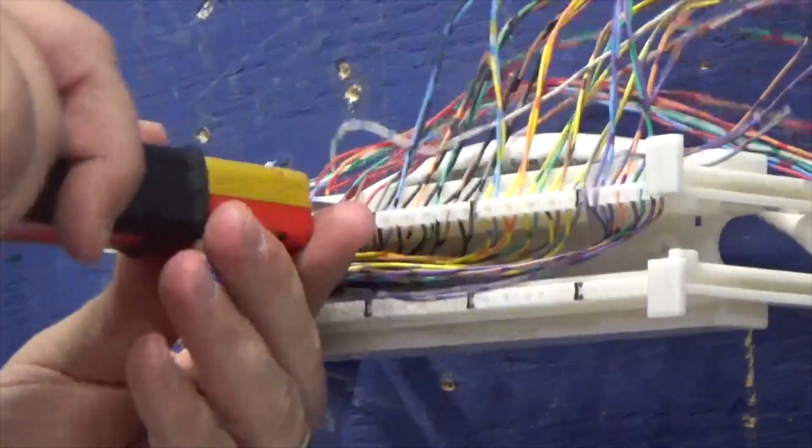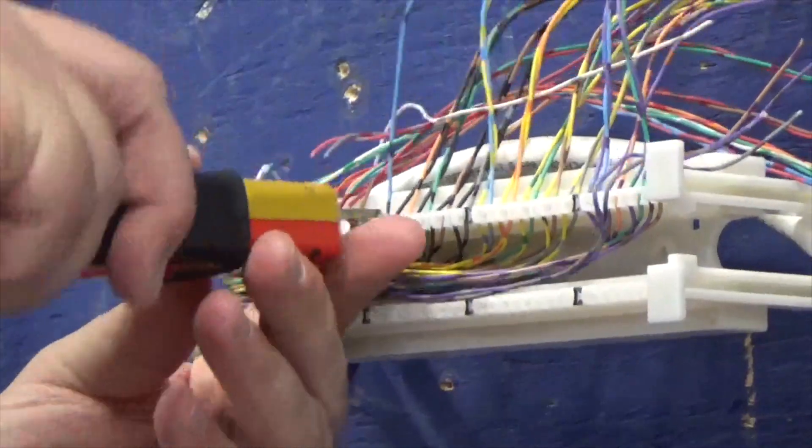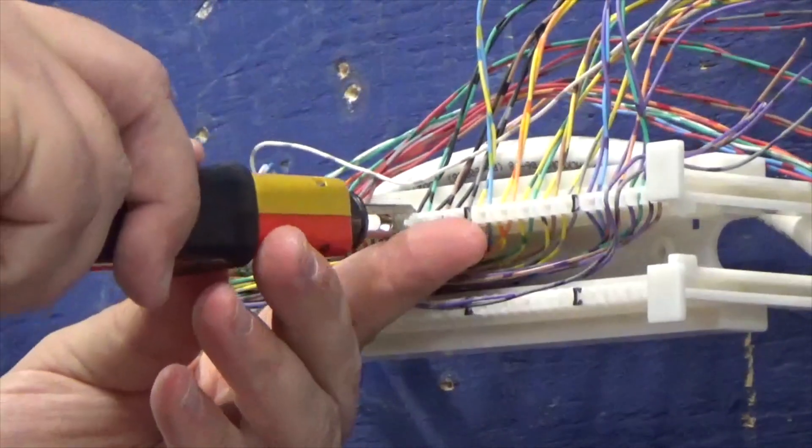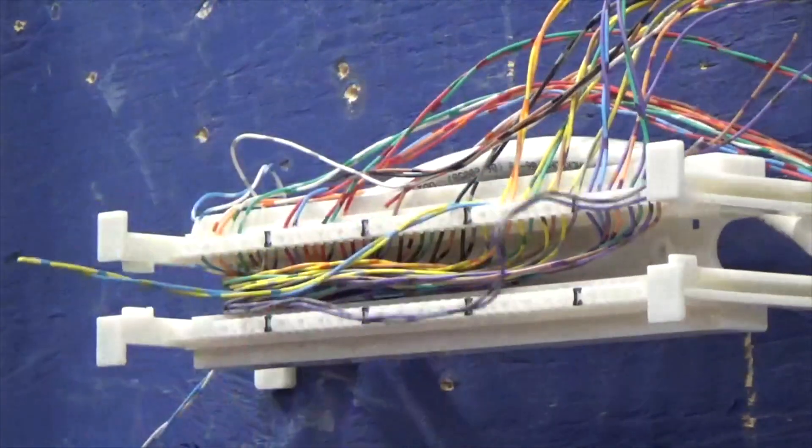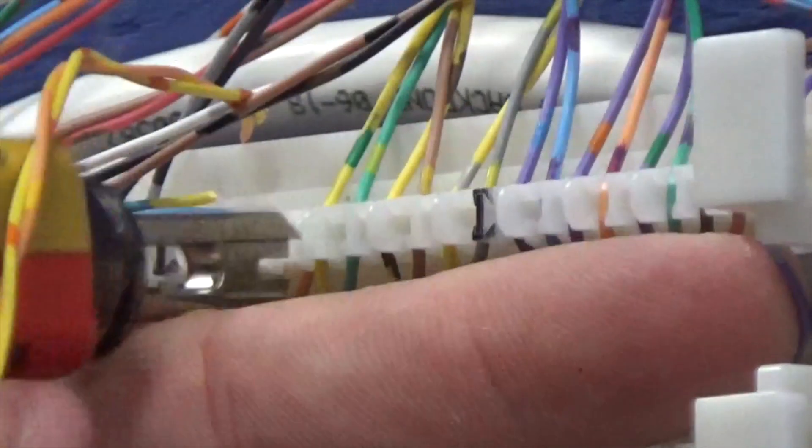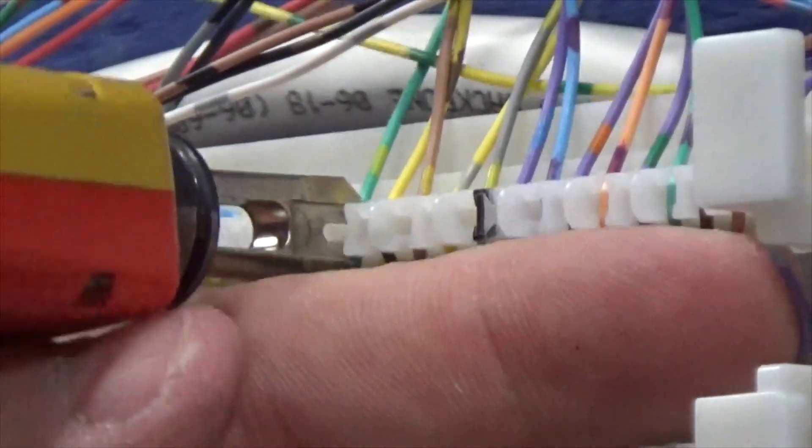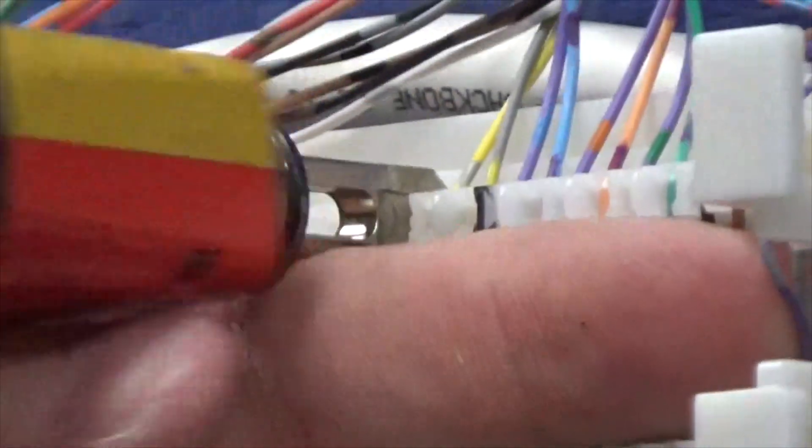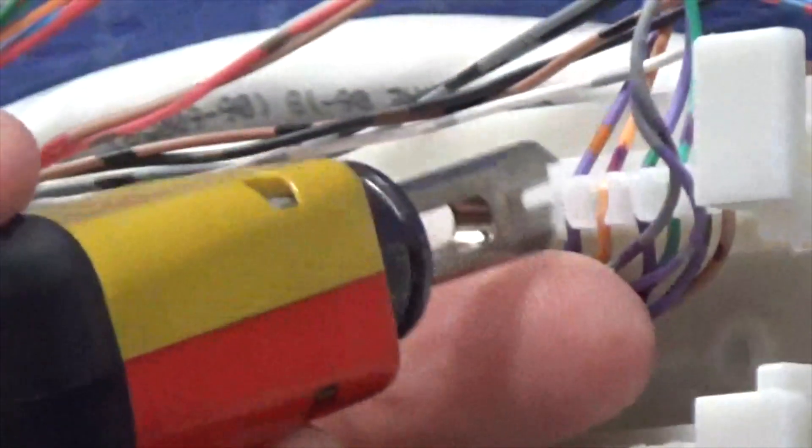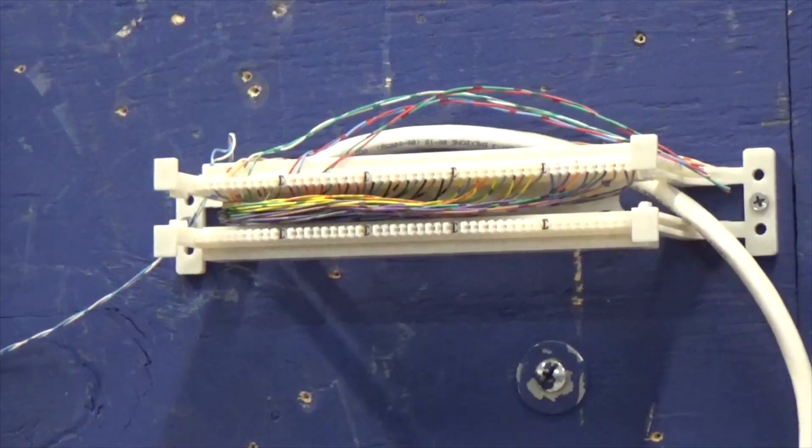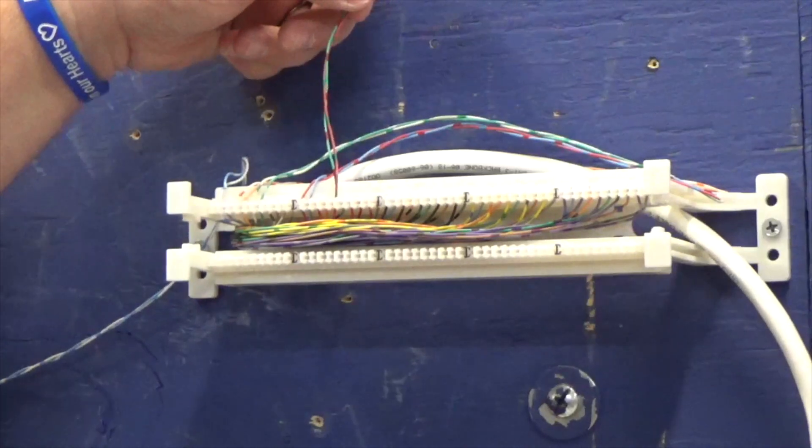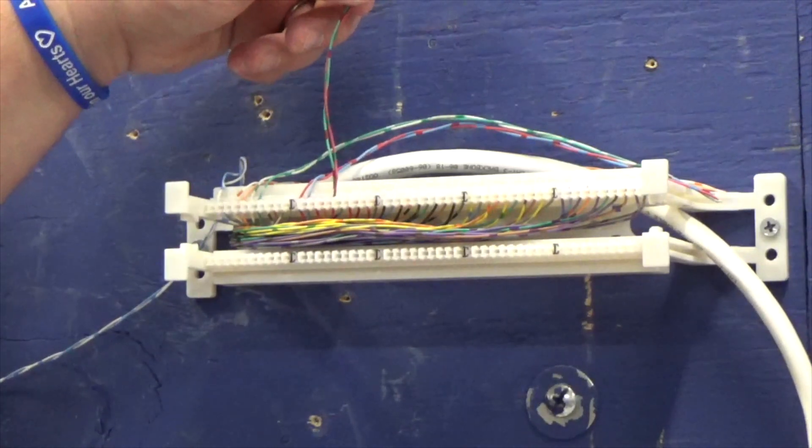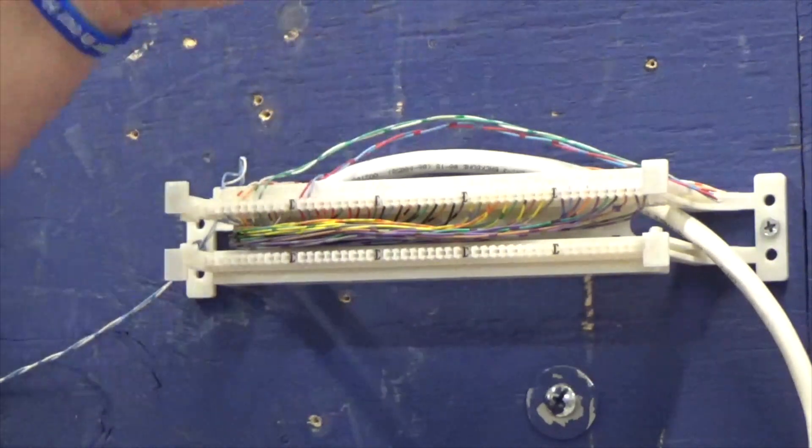So now that we have it all punched down, you can see that there are some wires that are still attached. The one thing you're going to want to do is you're not going to want to yank them because you don't want to pull them out. Now, there's no metal in a 110 block. So what I want you to remember is just kind of twist them and they come right off.